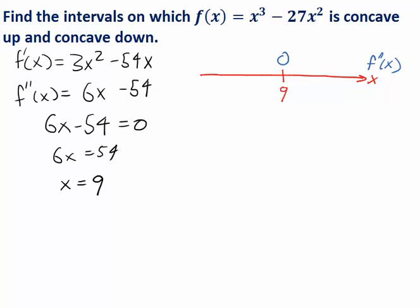Usually it's possible that the second derivative could be positive on both sides or negative on both sides, but typically we expect to see a change. Let's plug in some easy numbers. Something on the left side of 9 — let's use zero. Plugging zero into 6x minus 54 gives negative 54, which is negative. And if I plug in something greater than 9, let's use 10, that'll be 60 minus 54, which is 6, and that's positive.